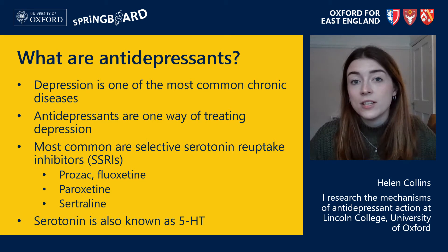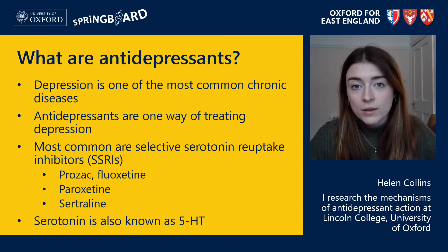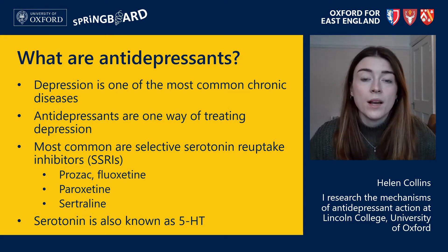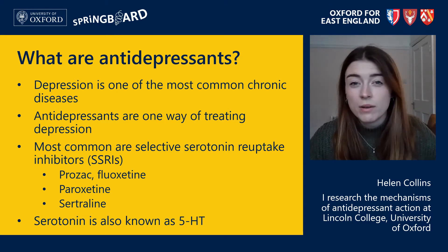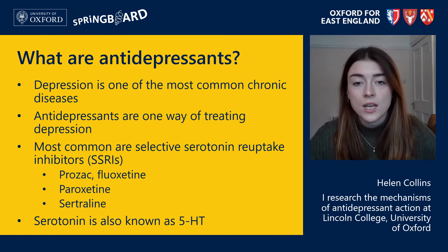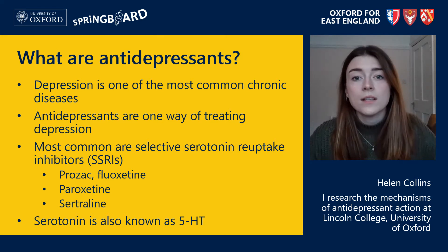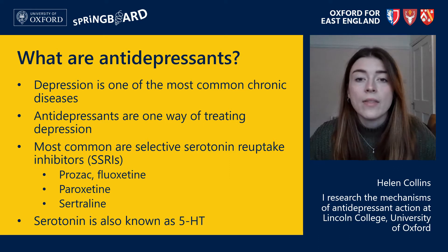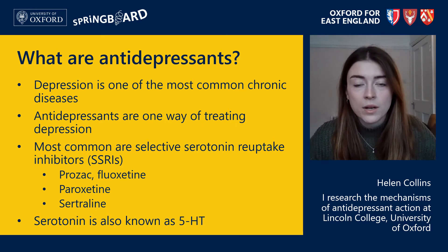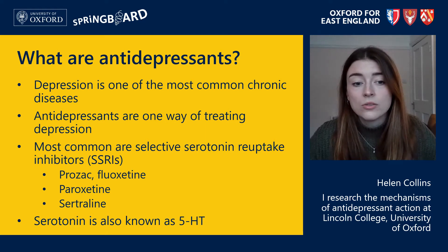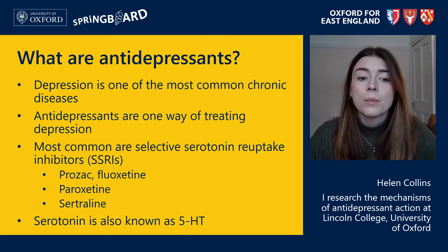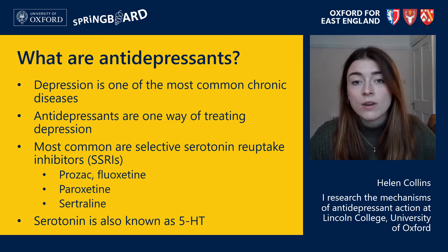Depression is one of the most common chronic illnesses in the world and it's characterised by low mood and feelings of lack of enjoyment which lasts for at least a few weeks, but in many cases it can last for many months and even years. Antidepressants are currently the first line pharmacological treatment for depression and the class that doctors are preferring at the moment are called selective serotonin reuptake inhibitors or SSRIs. These include drugs such as fluoxetine, also known as Prozac, paroxetine and sertraline. SSRIs act on serotonin or 5-HT in the brain.